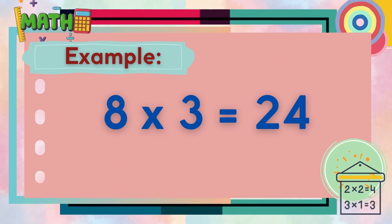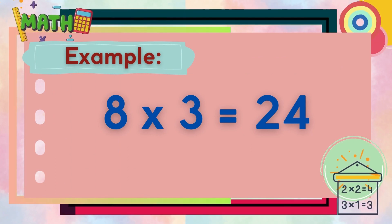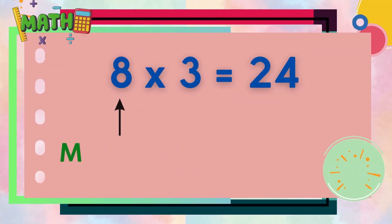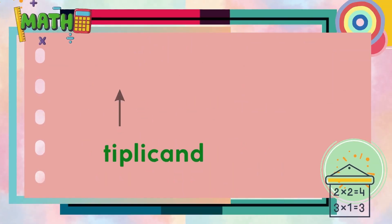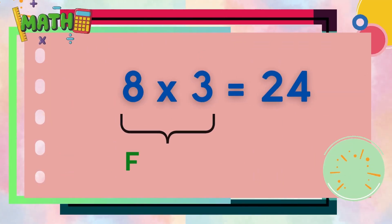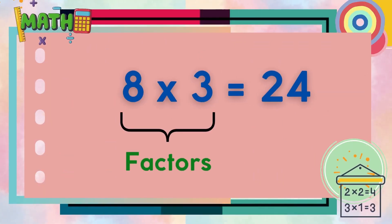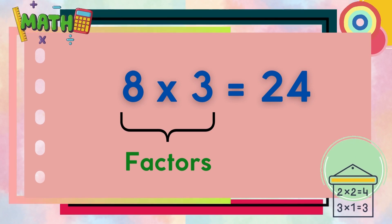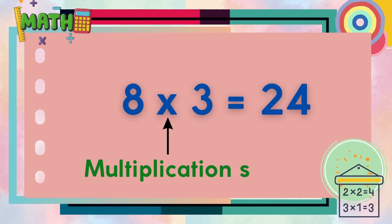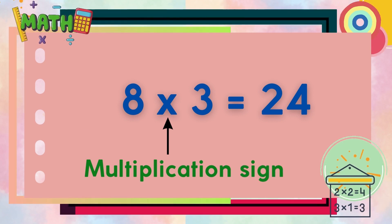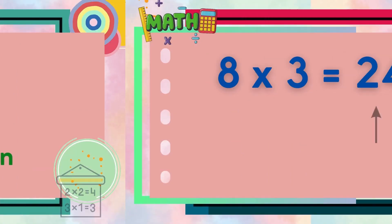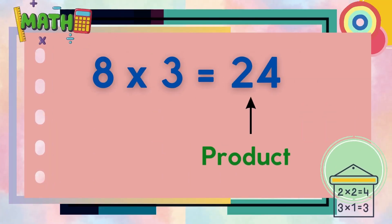Now let's have this example: 8 times 3 is equal to 24. 8 is the multiplicand, 3 is the multiplier, and 8 and 3 are also known as factors. The sign between 8 and 3 is the cross sign used to represent multiplication, followed by the equal sign, and the product is 24.